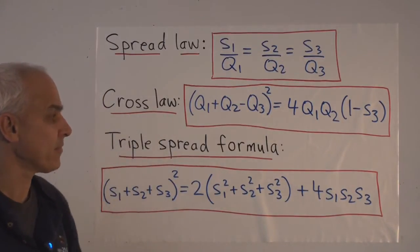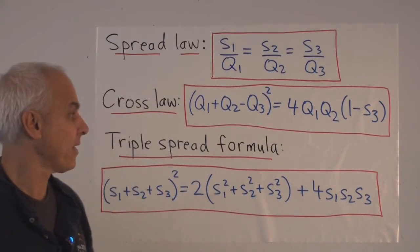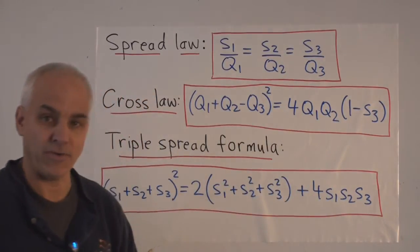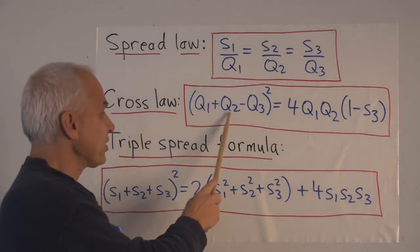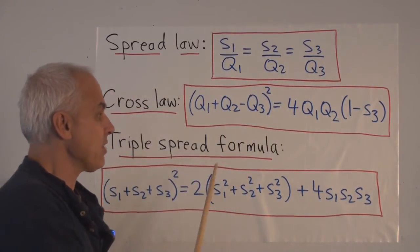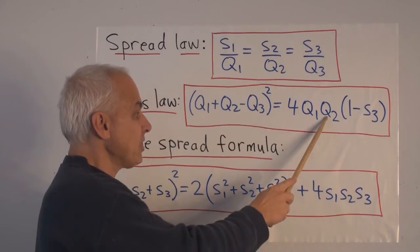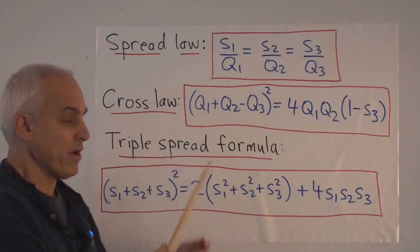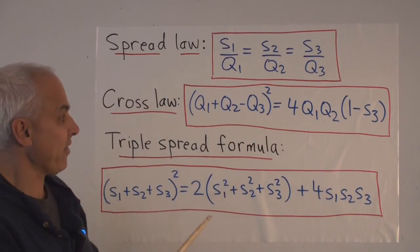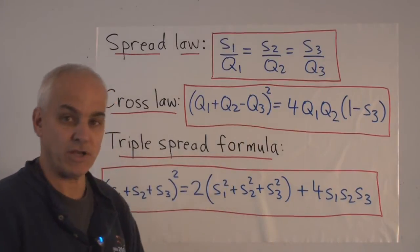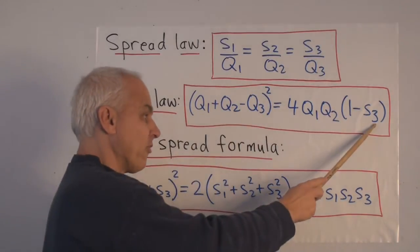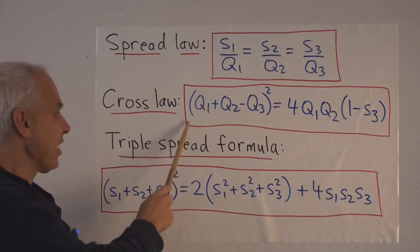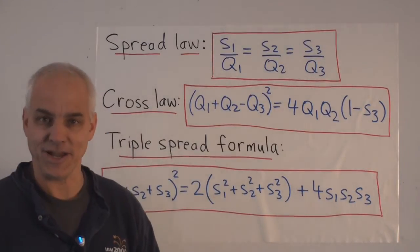The next law is the cross law, probably the most important of all. It expresses a spread in terms of the three quadrances: (q1 + q2 − q3)² = 4·q1·q2·(1 − s3). That's only one of three possible cross laws — you can vary it by interchanging indices 1, 2, and 3 to get versions with s2 or s1. This is the rational analog of the cosine law.